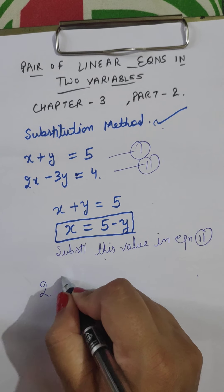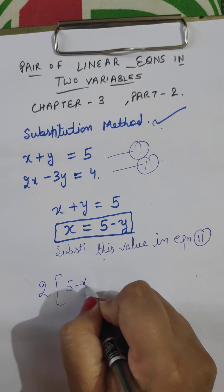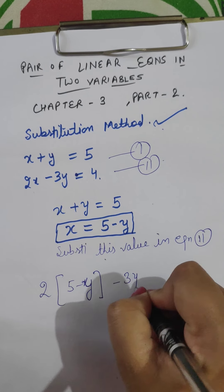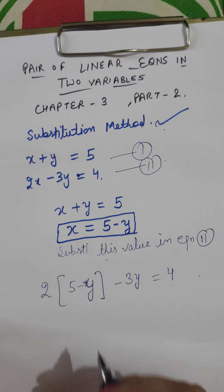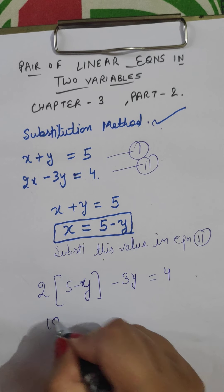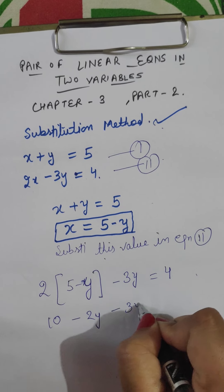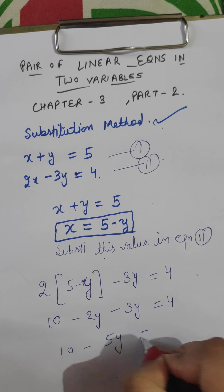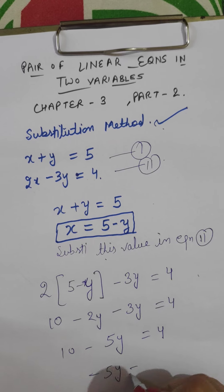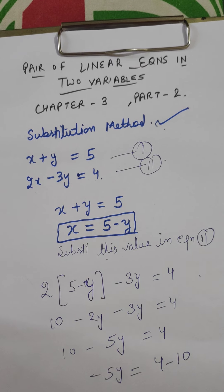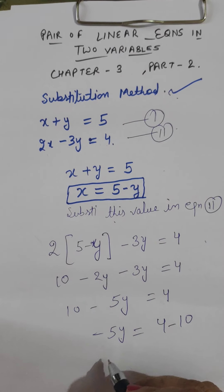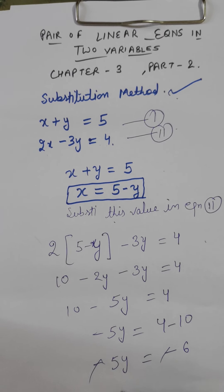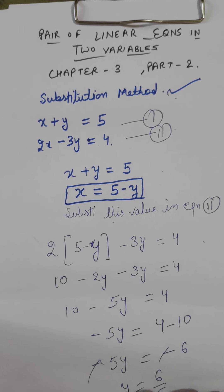Now, 2 multiplied by the value of x, which is (5 minus y), minus 3y equals 4. Solving this: 10 minus 2y minus 3y equals 4; 10 minus 5y equals 4; minus 5y equals 4 minus 10 by transposing. So minus 5y equals minus 6.